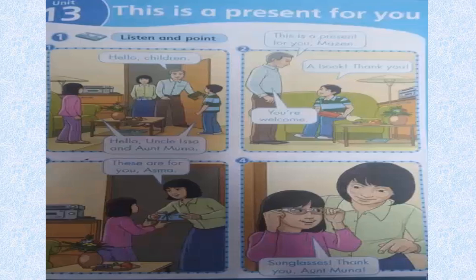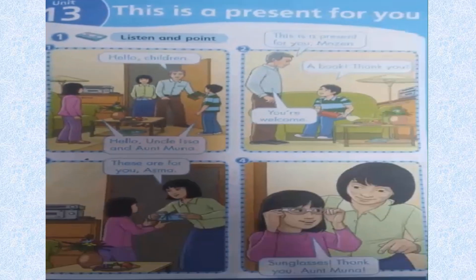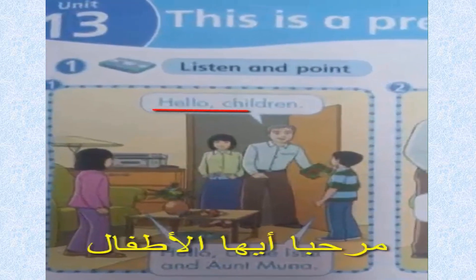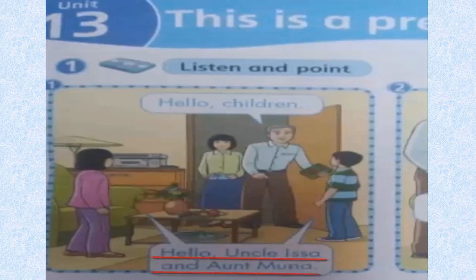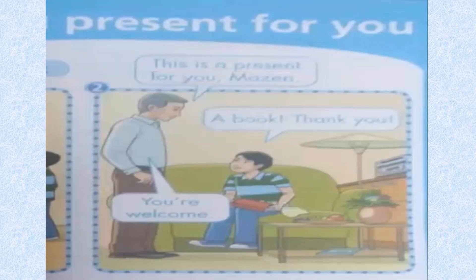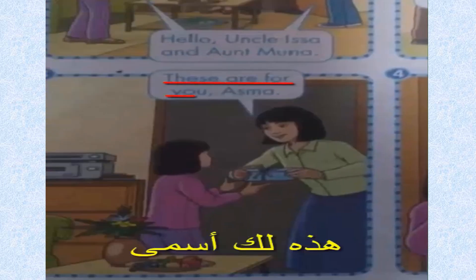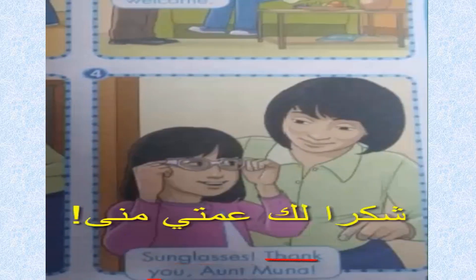Go to this lesson, Unit 13. This is a present for you. Hello children. Hello Uncle Lisa and Aunt Muna. This is a present for you, Mazin — a book. Thank you. You are welcome. These are for you, Asma — sunglasses. Thank you, Aunt Muna.